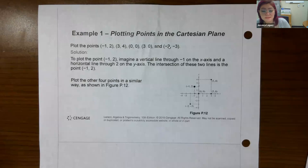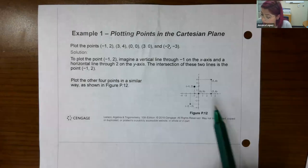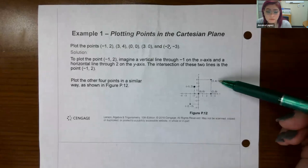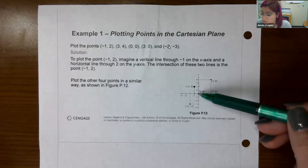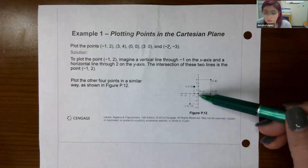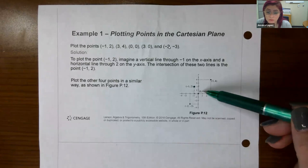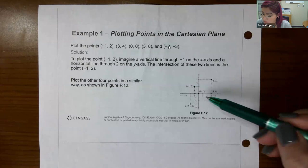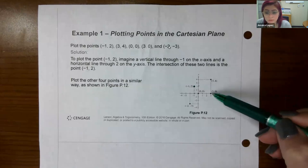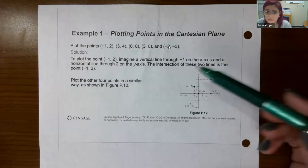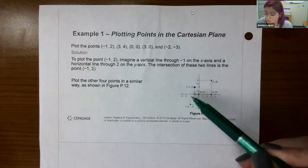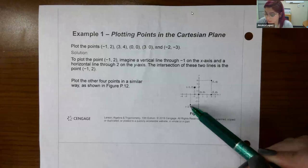For the point (3, 4), that's a positive three x value, so you go over to positive three. Then you go up four units for the y value, and you get the location of point (3, 4). Now, (0, 0) means you do not move left or right for x, and you do not move up or down for y — you are literally at the origin. For the point (3, 0), your x value is a positive three, but since the y-coordinate is zero, you do not move up or down, so the point lies on top of the x-axis. For the point (-2, -3), you go left two units for x, and then down three units for y.